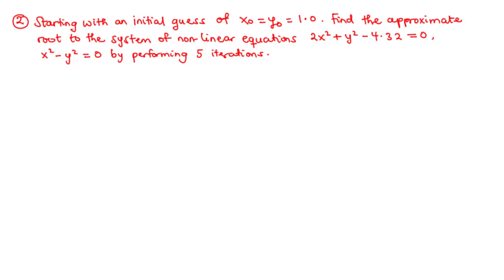In our second example on systems of non-linear equations using the fixed point iteration method, starting with an initial guess of x0 equals y0 equals 1.0, we are going to find the approximate root to the system of non-linear equations given: 2x squared plus y squared minus 4.32 equals 0, and x squared minus y squared equals 0, by performing 5 iterations.